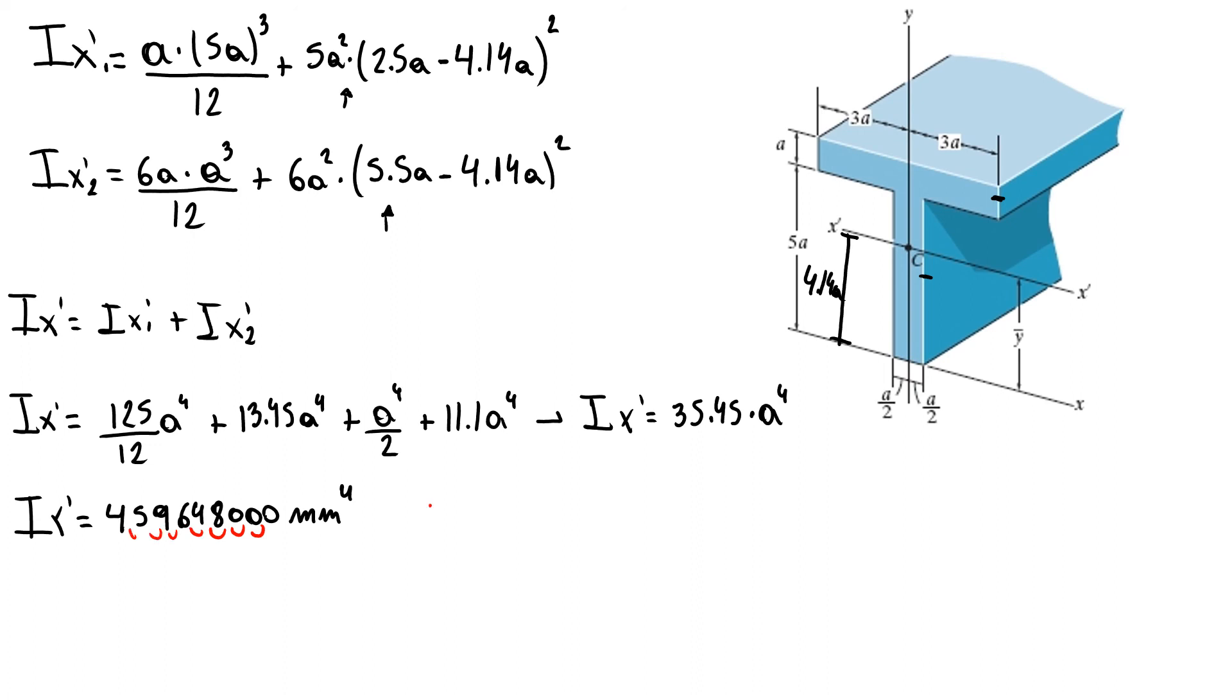So my final answer for the moment of inertia around x-prime will be 4.60 times 10 to the 8 millimeters to the fourth. This is our approach and our final answer for part B, the moment of inertia.